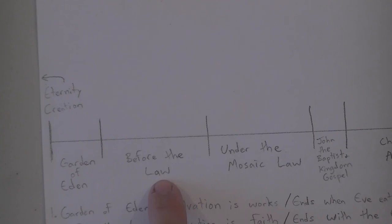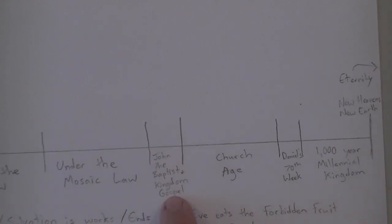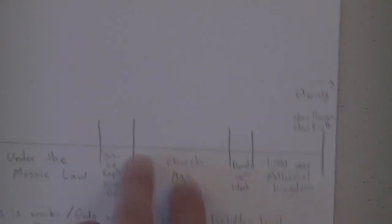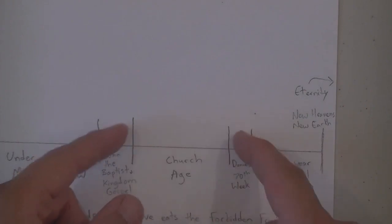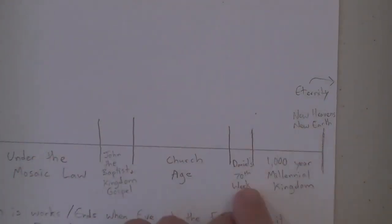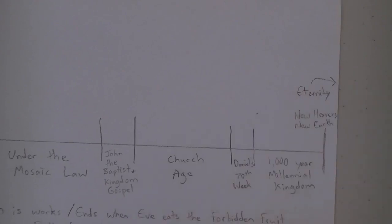The Mosaic law lasts until John the Baptist and the kingdom gospel come in. That lasts until Jesus dies on the cross, which brings in the church age. Then you have Daniel's 70th week — this is the gap between the 69th and 70th week, the church age. Daniel's 70th week, then the thousand-year millennial kingdom is the final one, and then you have new heavens and a new earth, and eternity on the other side. That's a very basic overview.